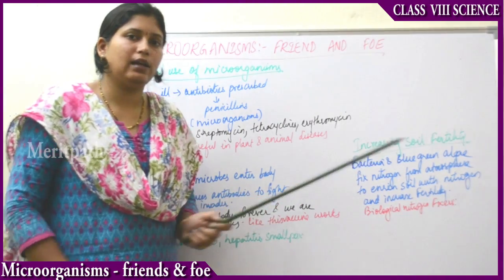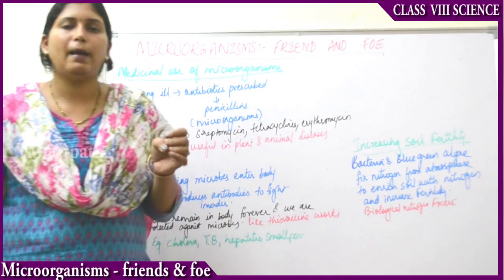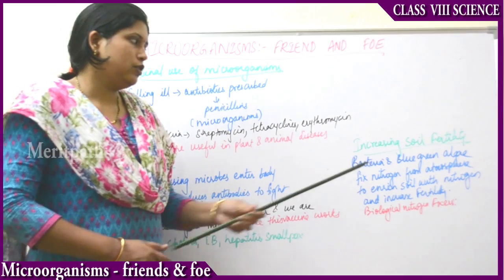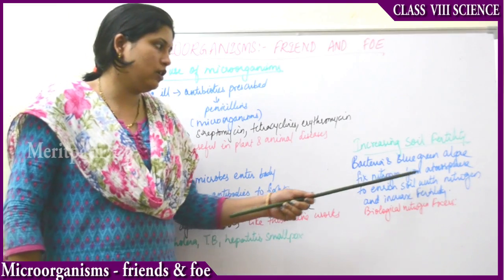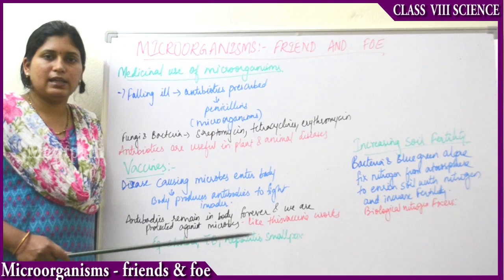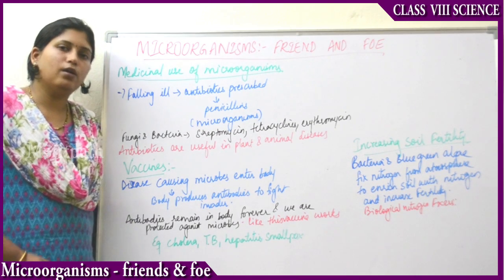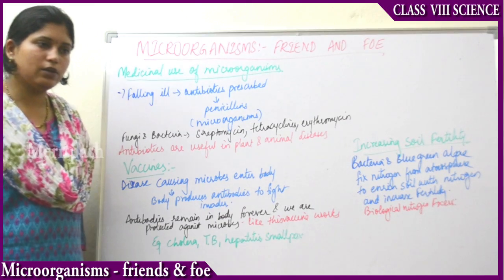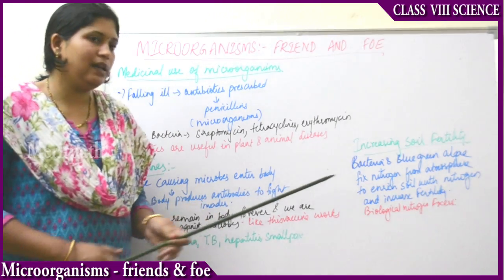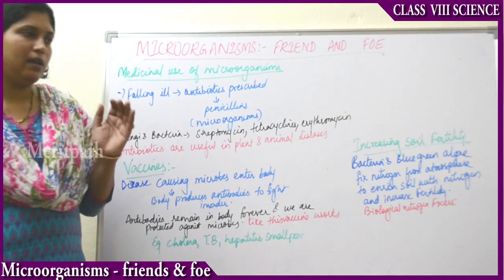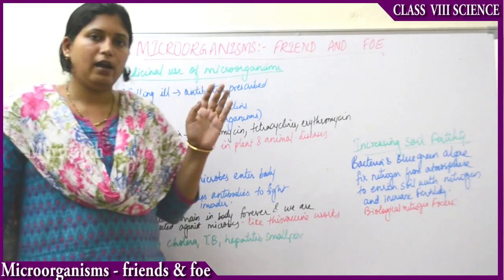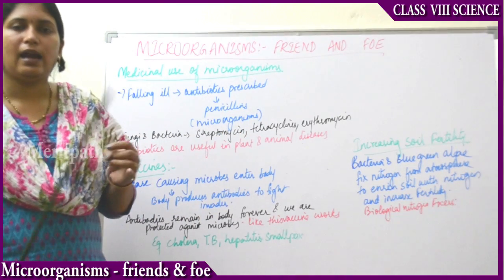Next is increasing soil fertility. Bacteria and blue-green algae take atmospheric nitrogen, fix it, and send it to the soil. Bacteria and blue-green algae fix nitrogen from the atmosphere to enrich the soil with nitrogen. Nitrogen acts as a good fertilizer for the soil. It is a major important mineral which is very important for soil fertility. Nitrogen-rich soil increases the fertility of the soil and is always required in major quantities.